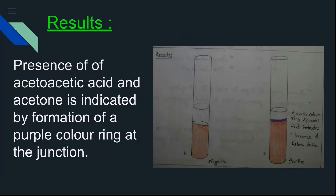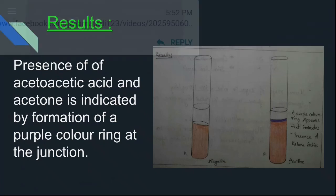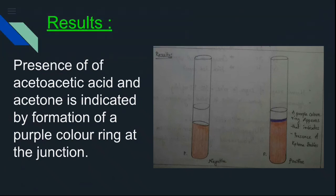If any ketone body — acetoacetic acid or acetone — is present, it is indicated by the formation of a purple color ring at the junction of the two layers. Two test tubes are shown: one with a purple color ring formed (positive) and another with no ring (negative). A positive result means ketone bodies are present.